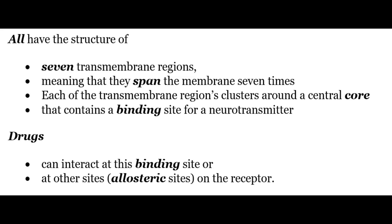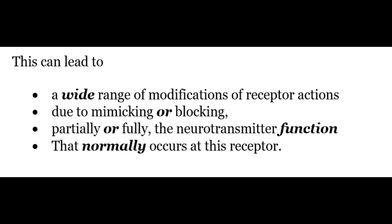All G-protein linked receptors have the structure of seven transmembrane regions, meaning that they span the membrane seven times. Each of the transmembrane regions cluster around a central core that contains a binding site for the neurotransmitter. Drugs can interact at this binding site or at other allosteric sites on the receptor. This can lead to a wide range of modifications of receptor function due to mimicking or blocking, partially or fully, the neurotransmitter function that normally occurs at these receptors.